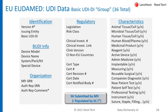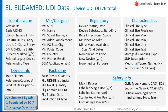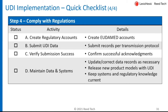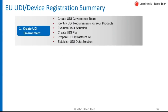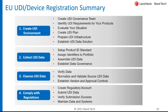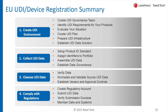There are 36 attributes relative to the basic UDI and 76 attributes specific to each device identifier, so it becomes quite a task to keep track of. Moving on to cleansing data — you need to verify data, normalize it, ensure it meets the regulations, and establish version controls. The last step is to comply with the regulations: create your regulatory accounts, submit the data, verify it's been submitted, and maintain the data over time. So those are the four C's — Create, Collect, Cleanse, and Comply.